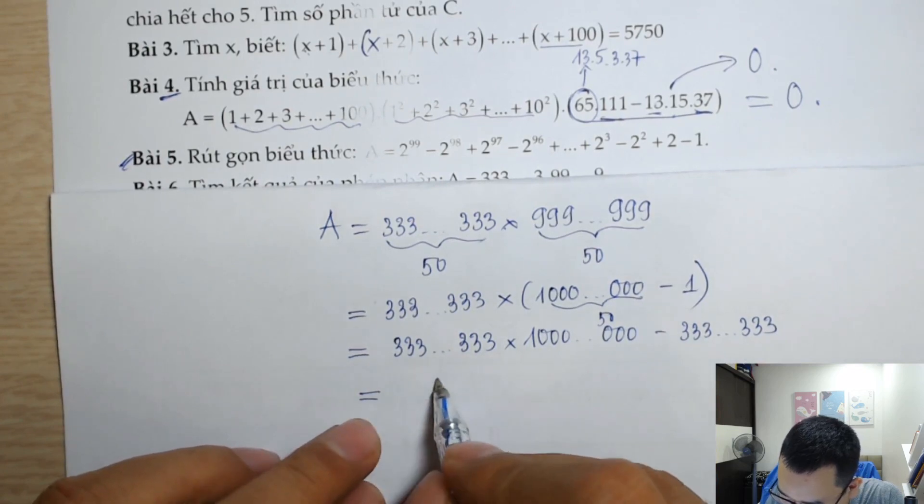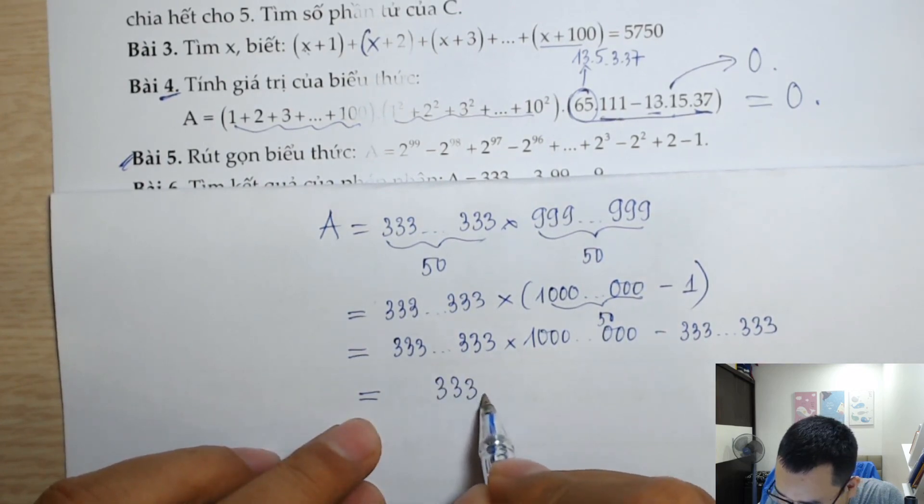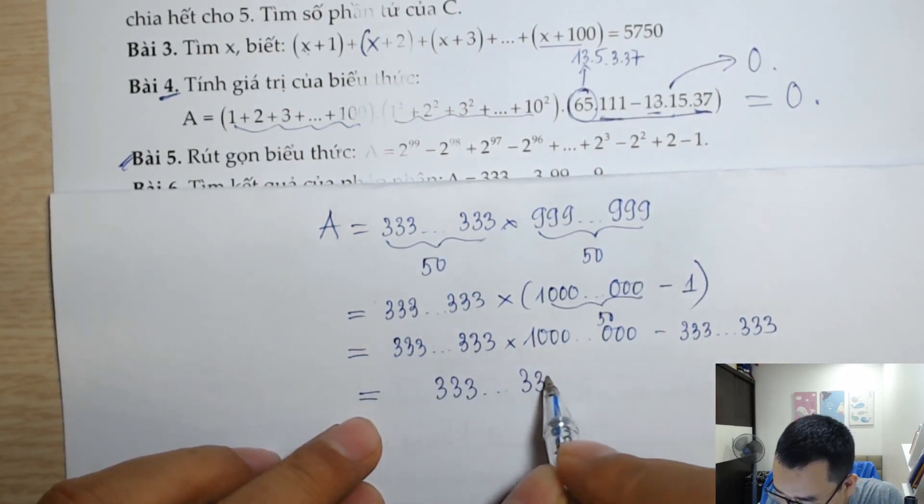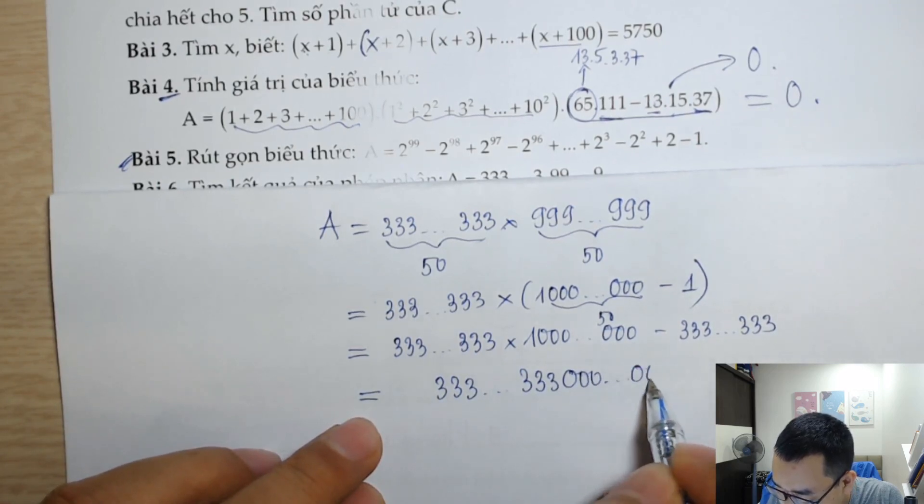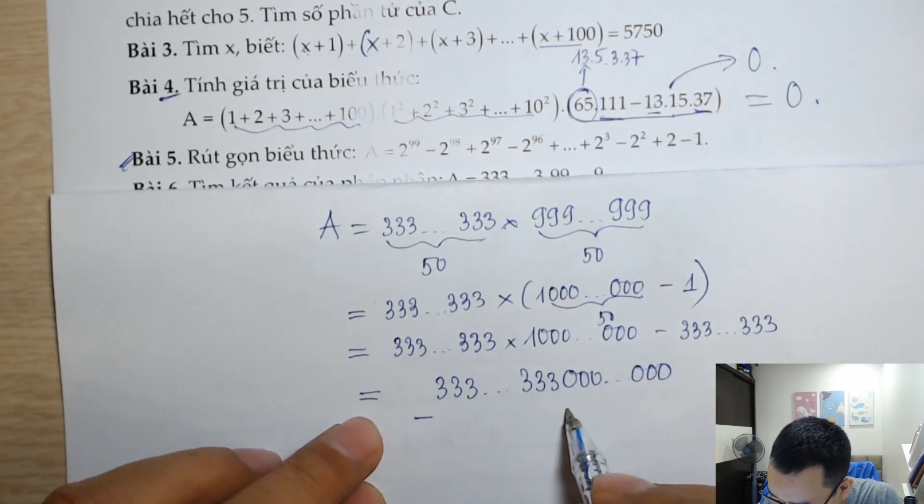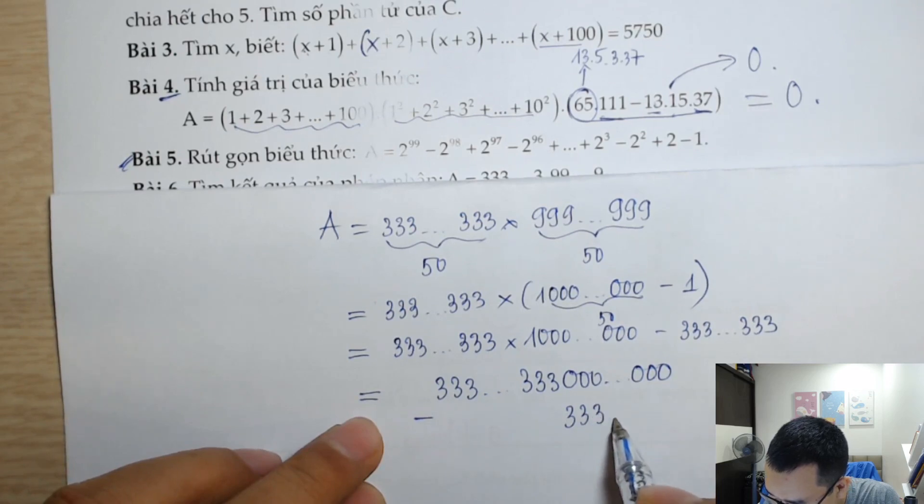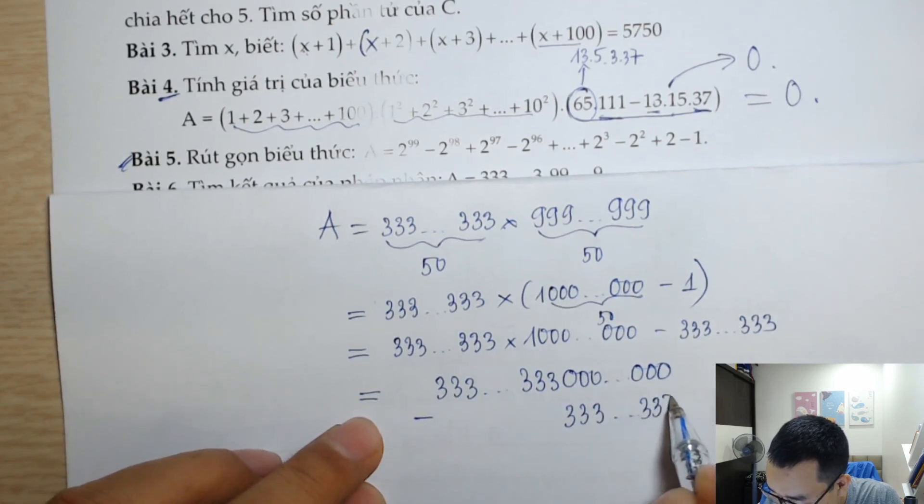Tuyệt vời chưa? Bây giờ thầy sẽ thấy là 333...333...000, thầy đặt cột dọc, thầy trừ đi này. Đấy, siêu chưa? Rồi, bây giờ trừ nhá.